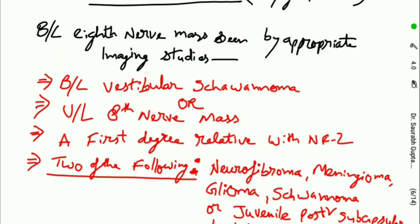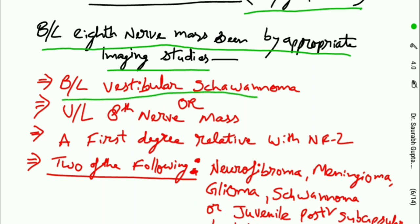Now let's see the criteria for NF2. Any of the four below can make the diagnosis for NF2: Bilateral eighth nerve mass on imaging studies, that is bilateral vestibular schwannoma. Or unilateral eighth nerve mass with a first degree relative with NF2 and two of the following: neurofibroma, meningioma, glioma, schwannoma, or juvenile posterior subcapsular lentiform opacity. Cutaneous manifestations are usually rare in NF2. The eye lesion which is characteristic is posterior subcapsular lentiform opacity.